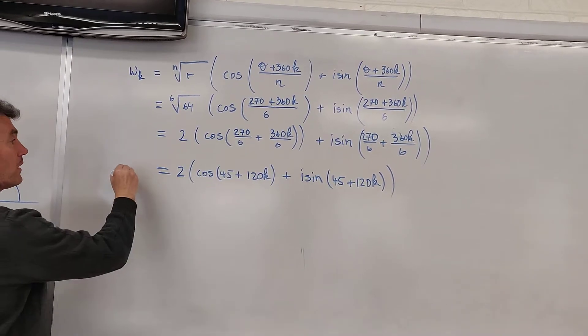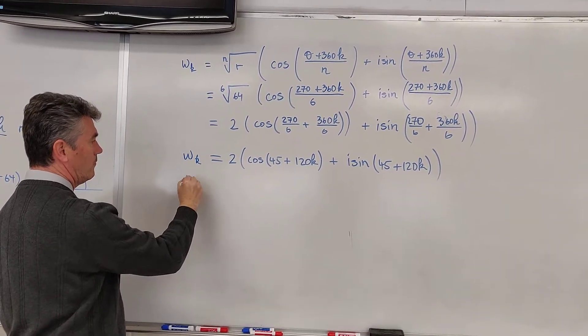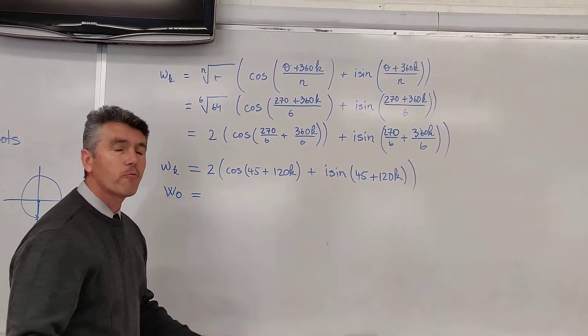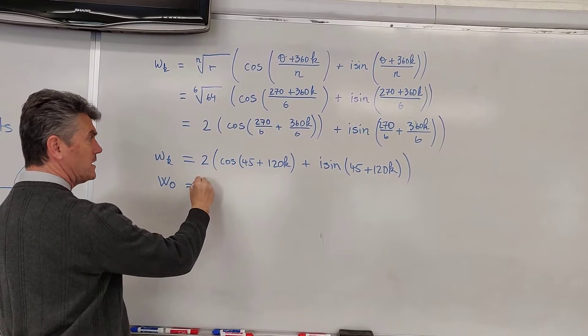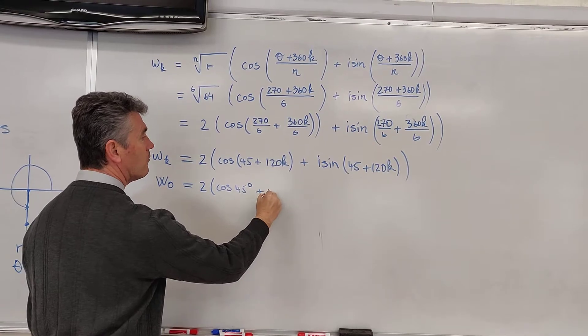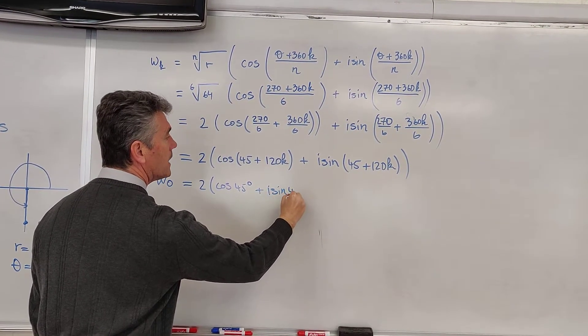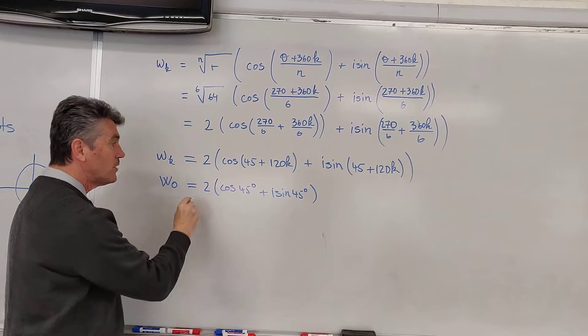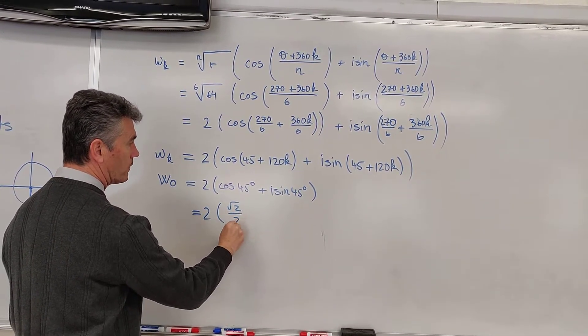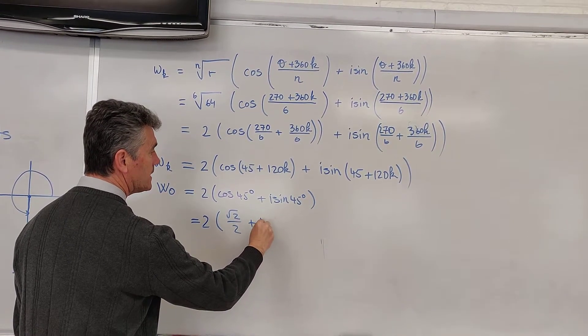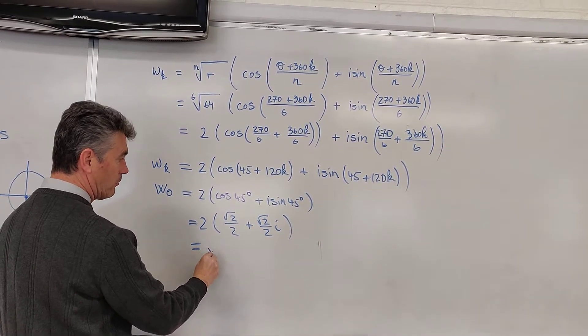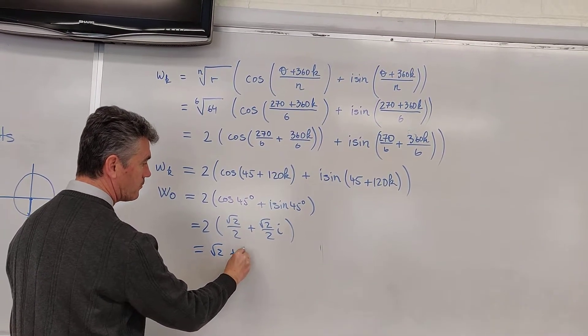So now we have a formula for w sub k. Now we have a formula for w sub 0. So I'm going to skip a lot of work. This is just square root of 2 plus square root of 2i.